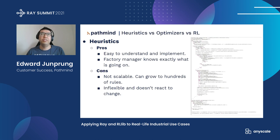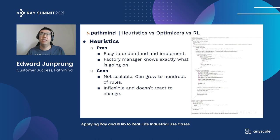Heuristics are the most widely used approach because they're really easy to understand and implement. When implementing a heuristic in practice, a factory manager knows exactly what's going on, so it's much easier to sell. However, the problem is that heuristics are not scalable — they can grow to hundreds of lines of rules, as you can see on the right. So if anything changes, it's really hard to update and maintain. The second con is that they're inflexible: if anything changes in the environment, you would have to update your heuristic.